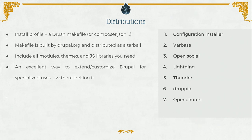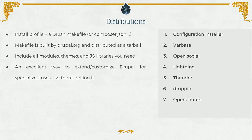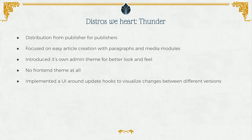A distribution is like — I think of it as the install profile is like a little module that says here's my laundry list of modules that I want to install and here are some changes I want to make to the installer. The distribution is that plus all of the actual modules it wants, plus all the JavaScript libraries it wants bundled into a single tarball and distributed on drupal.org. The install profile includes a list of modules to install, because you can have more modules in your distribution that you're not enabling by default.